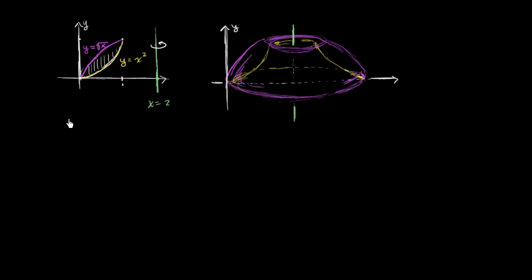And so let's try to do it with the shell method. And so to do that, what we do is we want to construct a shell. So let's imagine, let me do this in a different color. Let's imagine a rectangle right over here. Let's imagine a rectangle right over there. It has width dx. So it has width dx.